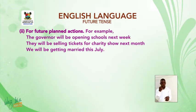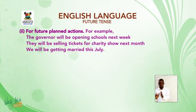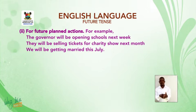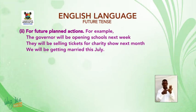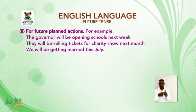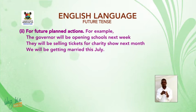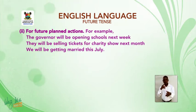Second use: it is used for future planned action. For example: The governor will be opening schools next week. They will be selling tickets for a charity show next month. We will be getting married this July.